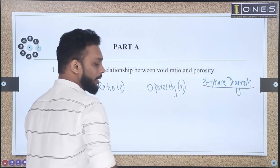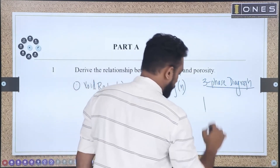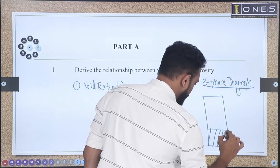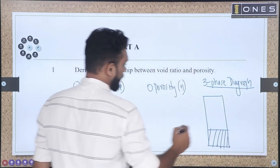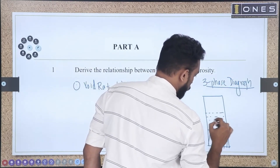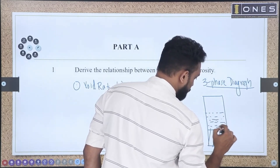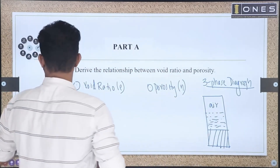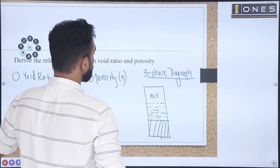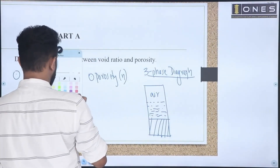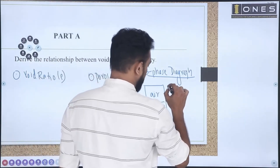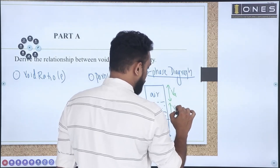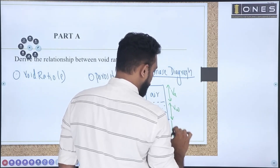We have a three-phase diagram in soil. Let's take a soil sample and define the solids. This is the volume of air, the volume of water, and the volume of solids.